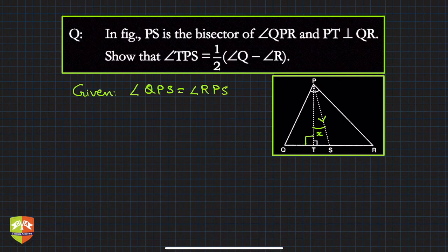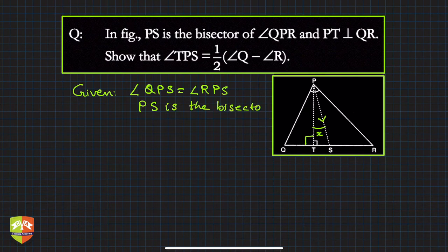Is it ∠RPS? Yes, because PS is the bisector. PS is the bisector, isn't it? Very good.